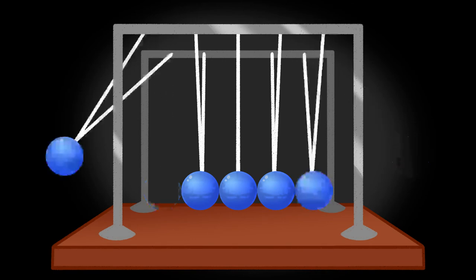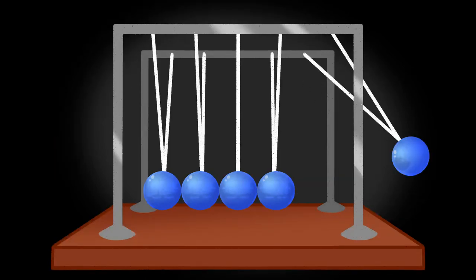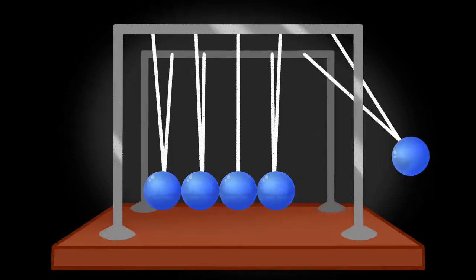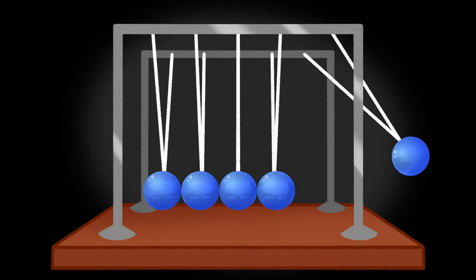Newton's Cradle is also a great example of an elastic collision. An elastic collision is a collision that doesn't result in a net loss of kinetic energy in a system despite the collision. Things collide and bounce off of one another with no loss in speed using the conservation of momentum.